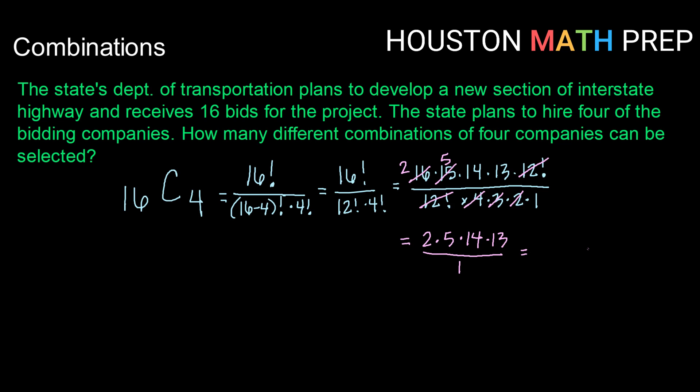Or 2 times 5 times 14 times 13 is 1,820 ways for them to choose 4 companies out of the 16 bids they received.